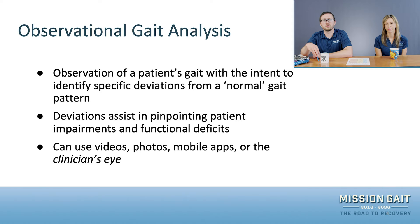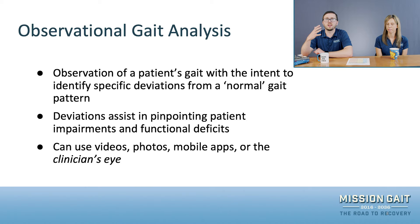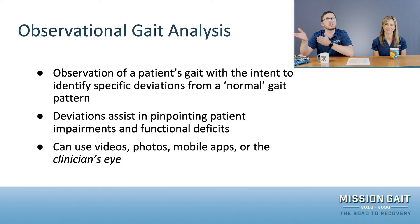The other thing you get from an observational gait analysis is that the deviations we observe are going to help assist in pinpointing different impairments or functional deficits a patient may be experiencing. Observational gait analysis covers a wide range of applications — from video to photos or using apps on people's phones. But for this lecture, we're particularly going to talk about what we refer to as the clinician's eye: your direct observation of the patient and things you can note from their gait.